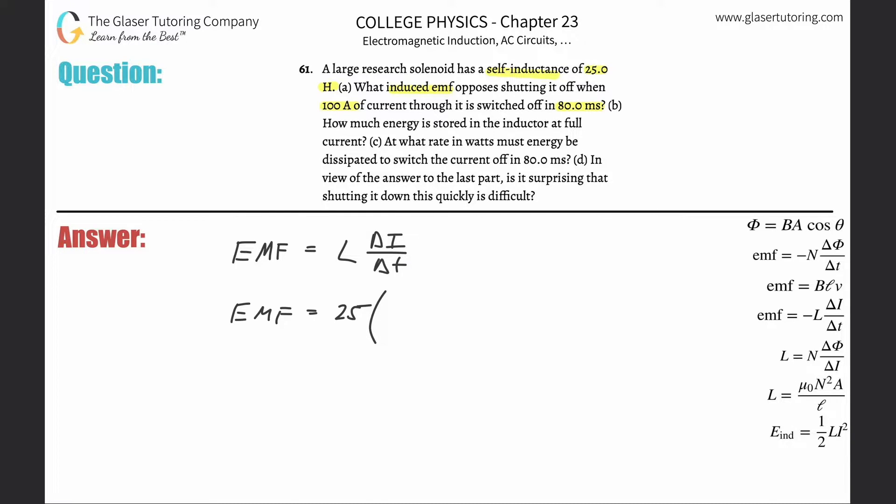Now we're going to plug in some of the values. The changing current is 100, the change in the time is 80 milliseconds; we need that in seconds, so take 80 and multiply by 10 to the minus 3. And here we go. So this is simply going to be 25 times 100 divided by 80 times 10 to the minus 3.